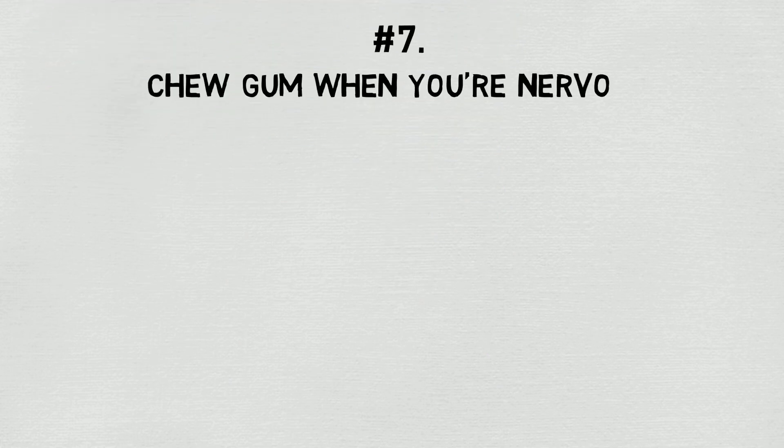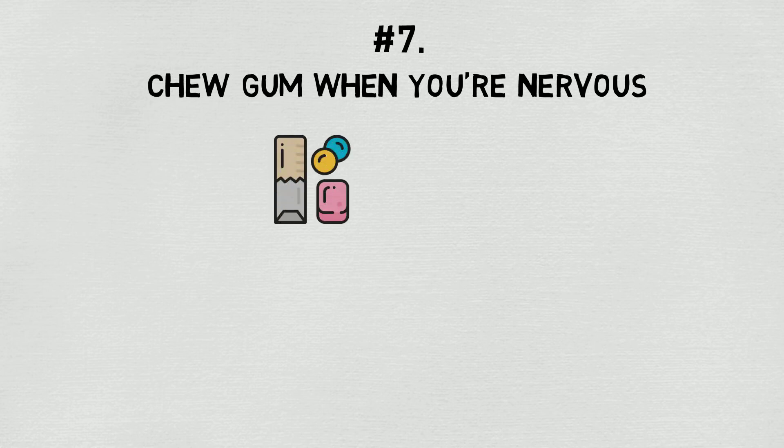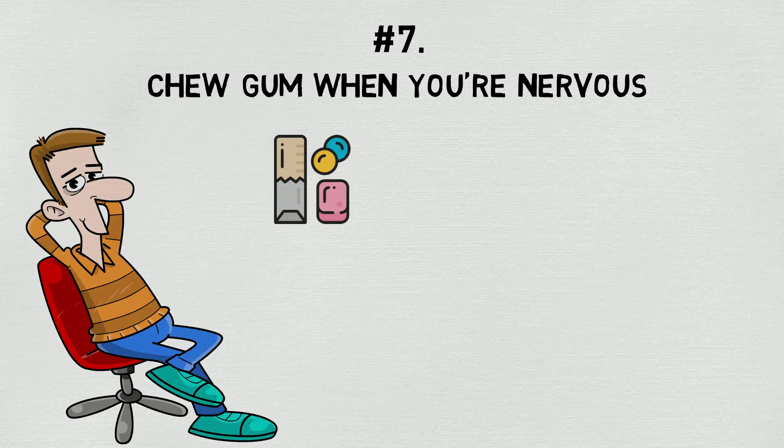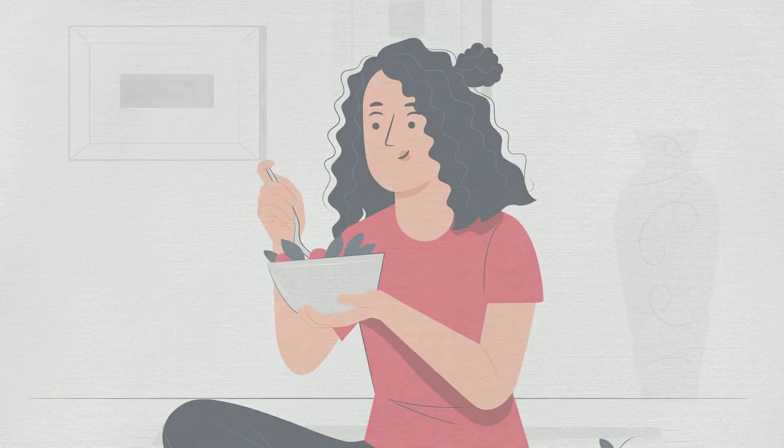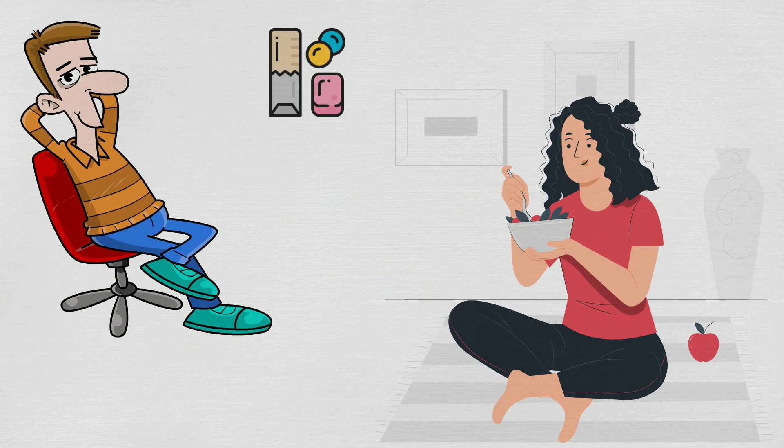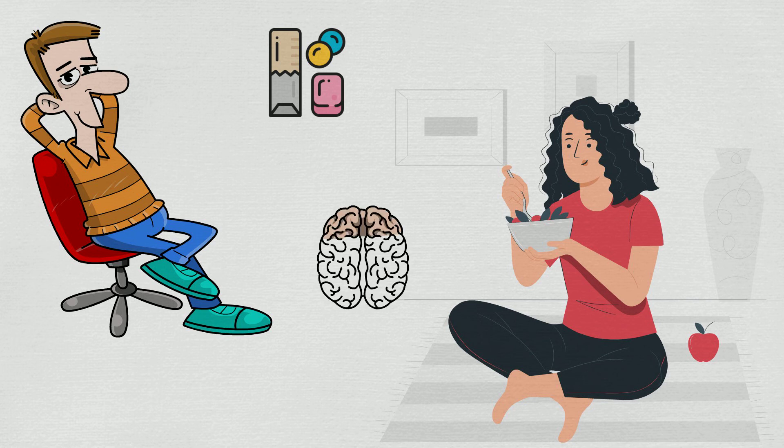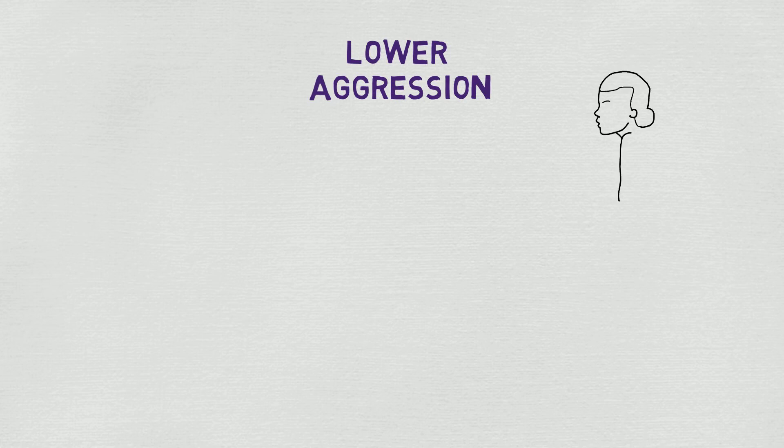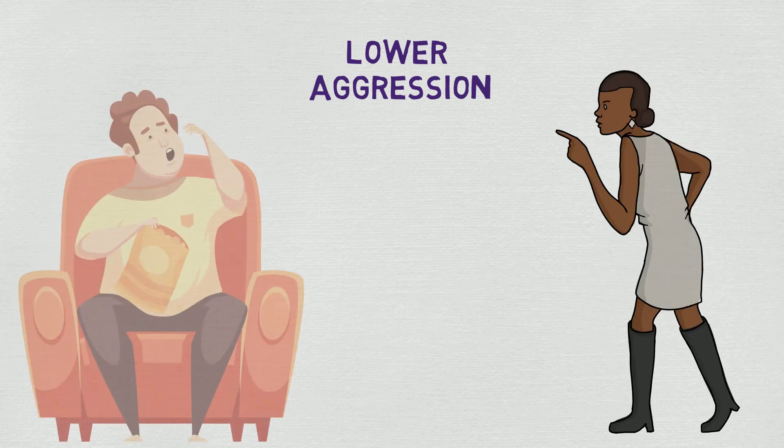Number seven, chew gum when you're nervous. Other studies have correlated chewing gum to calming anxiety and nervousness. The theory is that eating and chewing are things we do when we're calm and not threatened, so chewing gum may imitate these feelings in the brain. Fun fact, this is also a great way to lower aggression in those around you. You've never seen one person yelling while another munches on chips, now have you?